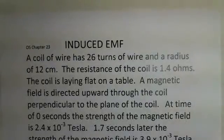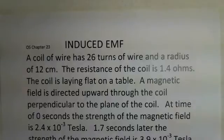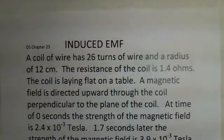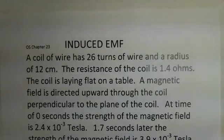In this situation, we have a coil of wire with 26 turns of wire, radius of 12 centimeters, with a particular resistance. The important feature on its orientation: imagine it laying flat on a table in the room where you are, and imagine that some external means...